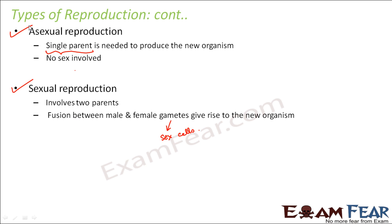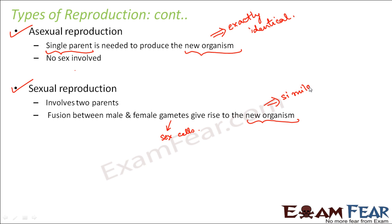In asexual reproduction, just one organism is enough, and the new organisms formed are exactly identical to the parent. But in sexual reproduction, the new organism has similarity to parents but is not exactly identical. For example, we might resemble our father to some extent, our mother to some extent, and we might also have traits which are new — neither present in our mother nor father. So in asexual reproduction you do not see any variation or new traits in the offspring.